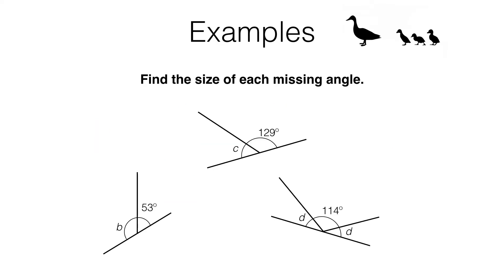Our second angle fact for this video is that angles at a point on a straight line add up to 180 degrees. Notice that this is half of 360 degrees. A turn of 180 degrees represents a half turn. In other words, if you're facing in one direction and you turn 180 degrees that means you are now facing in the opposite direction.